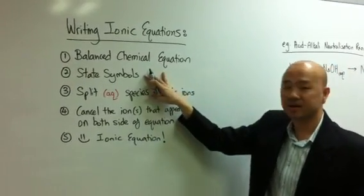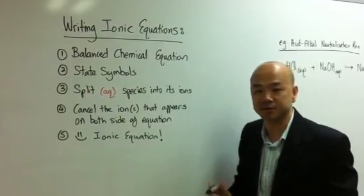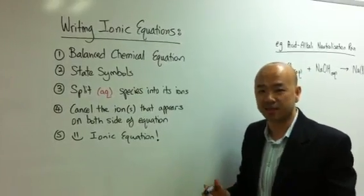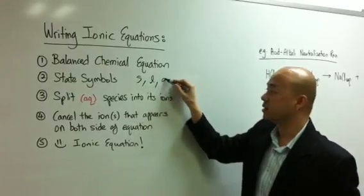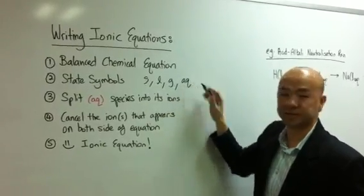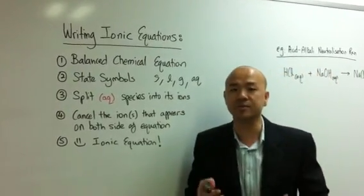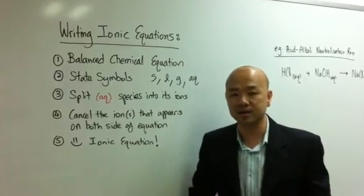Once you make sure that the chemical equations are balanced, then you need to insert in the correct state symbols. How many types of state symbols are there? In chemistry, there are four: solid, liquid, gas, and aqueous. Alright, these are the four state symbols and you must be able to insert them correctly into the equation.